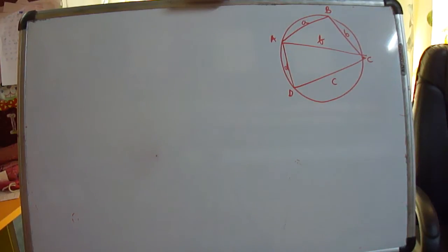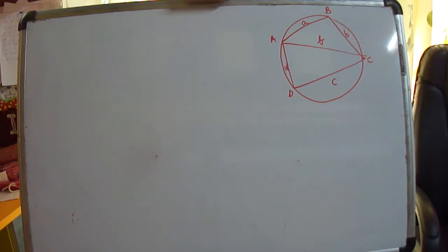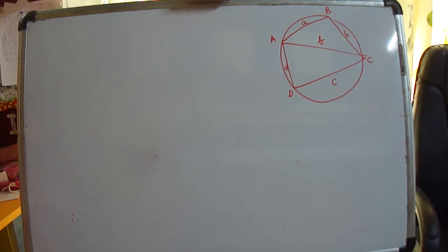In the last video, we saw that the area of any quadrilateral can be expressed in terms of its sides. Today, we shall express a diagonal in terms of its sides and also prove Ptolemy's theorem.